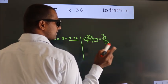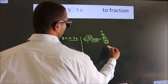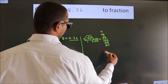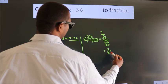Cancel with 2 again. 2 into 9, 2 into 25. So the fraction we got is 9 by 25.